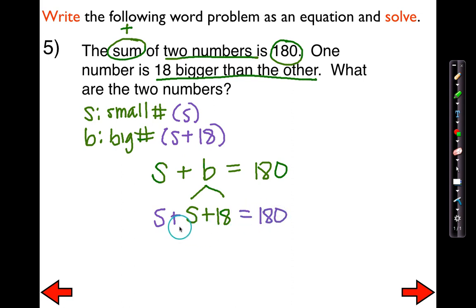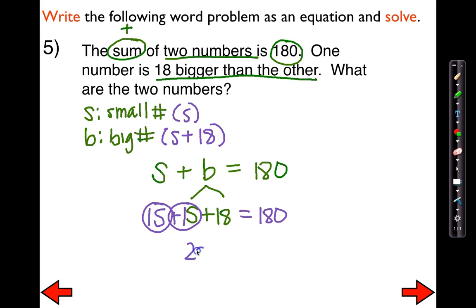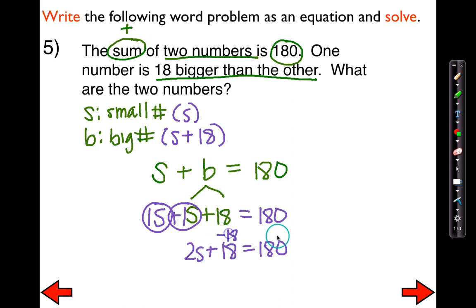Can I distribute? I can't. Can I combine like terms? Yes. Here is one S and another S — one S plus one S gives me 2S plus 18 equals 180. Now I'm going to try to undo the addition. I'm going to get rid of the constant. The opposite of adding 18 is subtracting 18 from both sides, which leaves me with 2S equals 162.